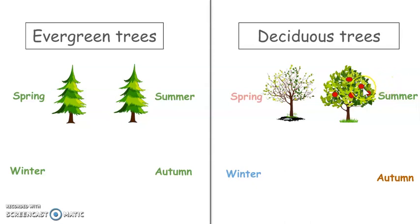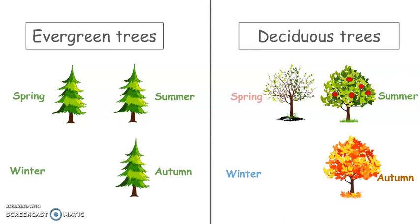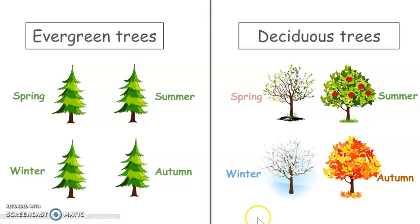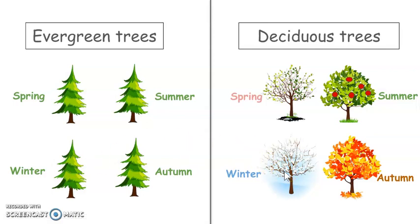Next, in autumn, evergreen trees are green, but deciduous trees are changing color and their leaves are falling. In winter, evergreen trees are — you guessed it — green. But deciduous trees now have no leaves.